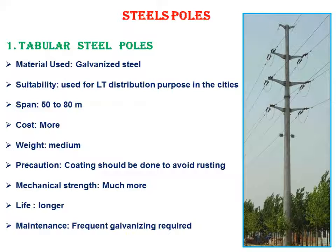The distance between steel poles is around 50 to 80 meters. The cost is more than wood. The weight is relatively light. As a precaution, we need to apply coating to prevent rust — like rubber paint on the metal parts. Mechanical strength is very good and can support heavy conductors and insulators. Life is very good — 100 to 150 years. Maintenance requires frequent galvanizing to prevent rusting or corrosion.